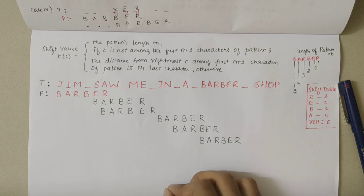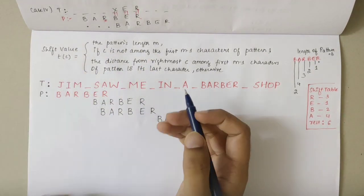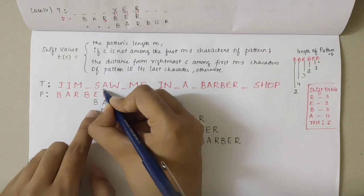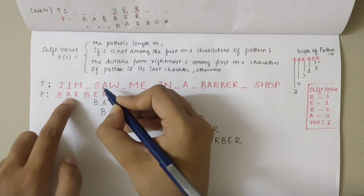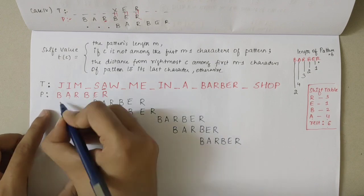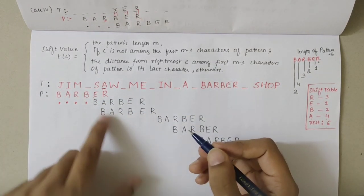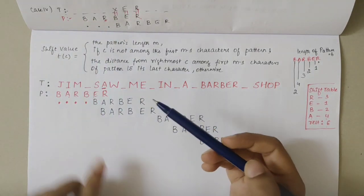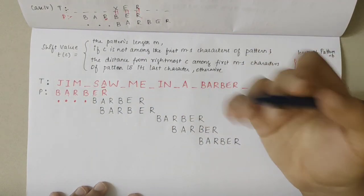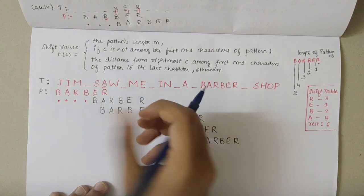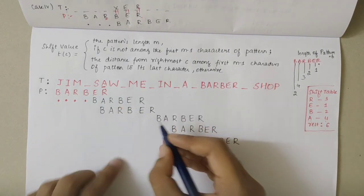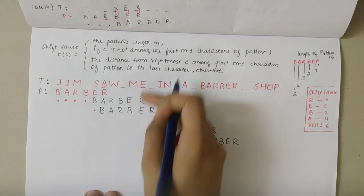Starting the matching from the first position in the text, comparing from the rightmost side. I compare A and R — they are not the same. I check if A is present in the pattern: yes, A is present, and its shift value is 4, so I shift 4 times, aligning A with A. Next, comparing from the rightmost side again: E and R are not the same. I check if E is in the pattern: yes, E's shift value is 1, so I shift once. E and E are now aligned.